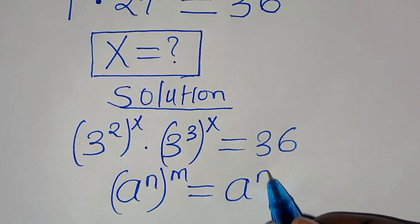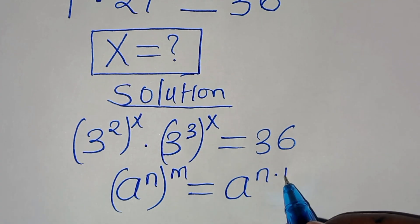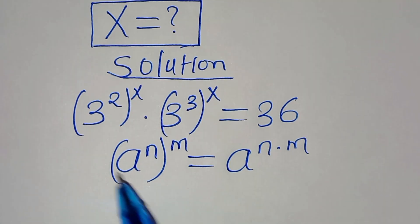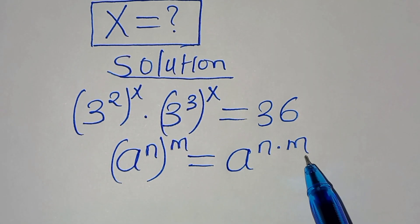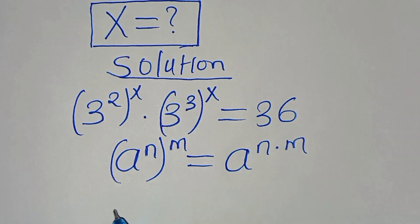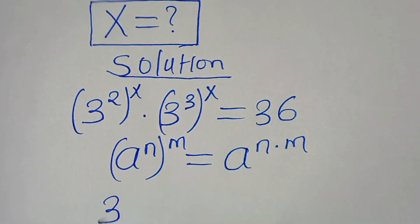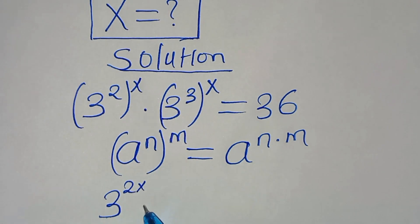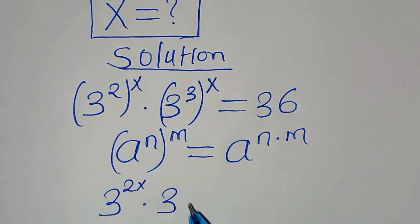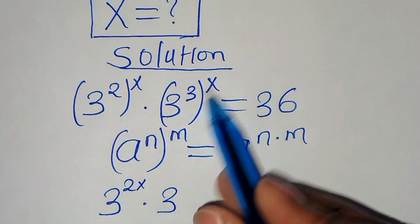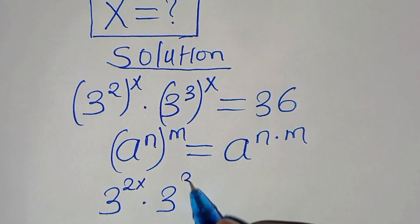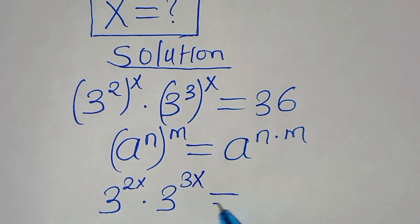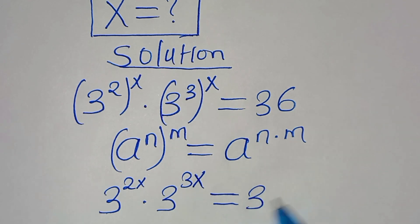Applying the exponent property a^(n^m) = a^(n×m), we get 3 to the power of 2x times 3 to the power of 3x, and this is equal to 36.